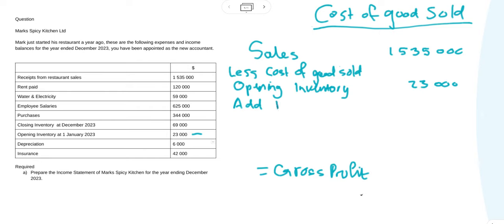We need to add the cost of the goods that we bought during the year. In this case our purchases are 344,000.